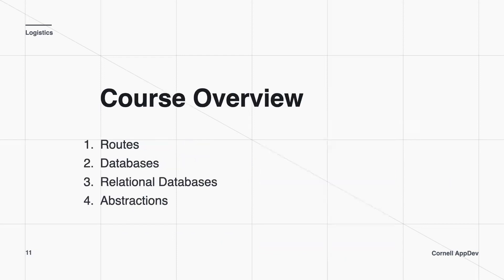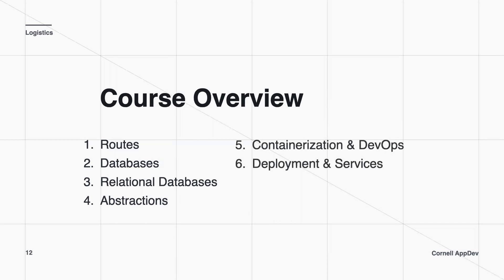For the course overview, the first four topics are routes, databases, relational databases, and abstractions — these are the main four concepts for setting up a database and backend development. Then we'll cover containerization, DevOps, and deployment and services, which is basically how to let others use your backend. The last two topics are authentication and images. Authentication is going to be really important for Hack Challenge, so make sure to show up to those last two.